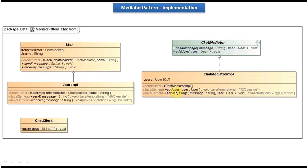The addUser method is used when any user wants to join the chat room — they call this method. The sendMessage method receives a message from a particular user and sends that message to all other users who have joined that particular chat room.